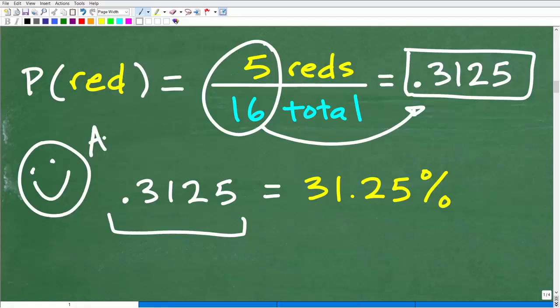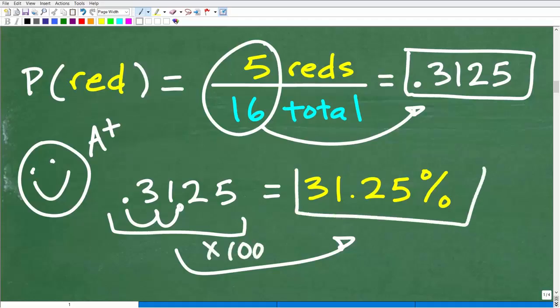But for those of you that took it to the next level and gave me this as a percent, you get an A plus. There's nothing wrong with these answers. But again, we're more used to seeing probability expressed as a percent. So how do I change a decimal to a percent? Well, pretty easy. All we need to do is move that decimal point over two places to the right or multiply by 100 and you end up with 31.25 percent.